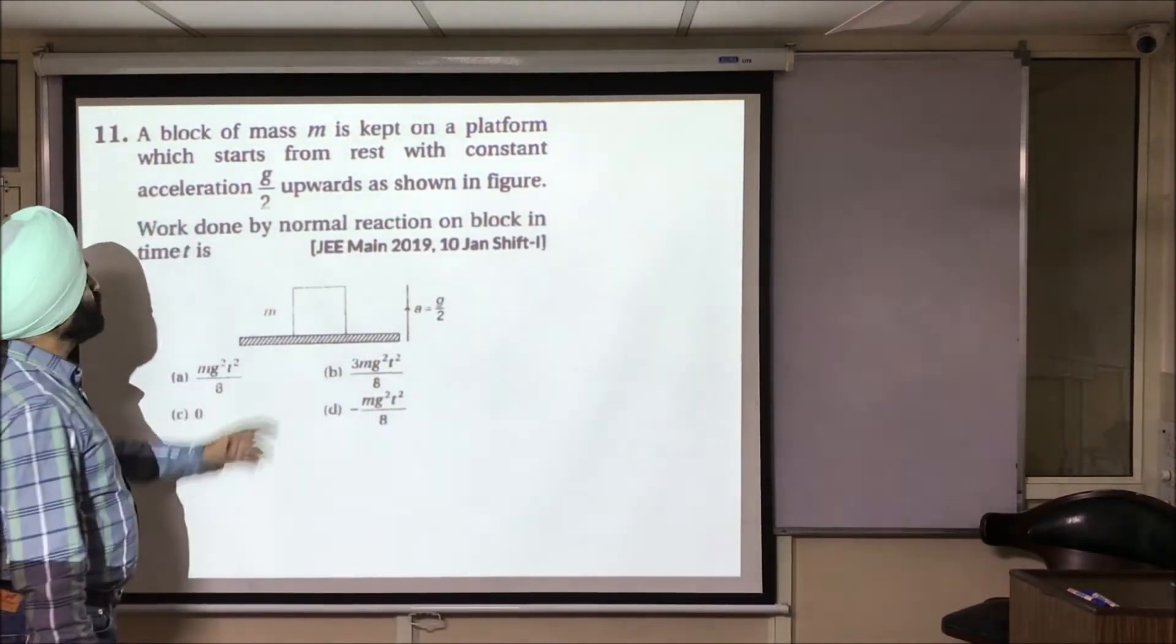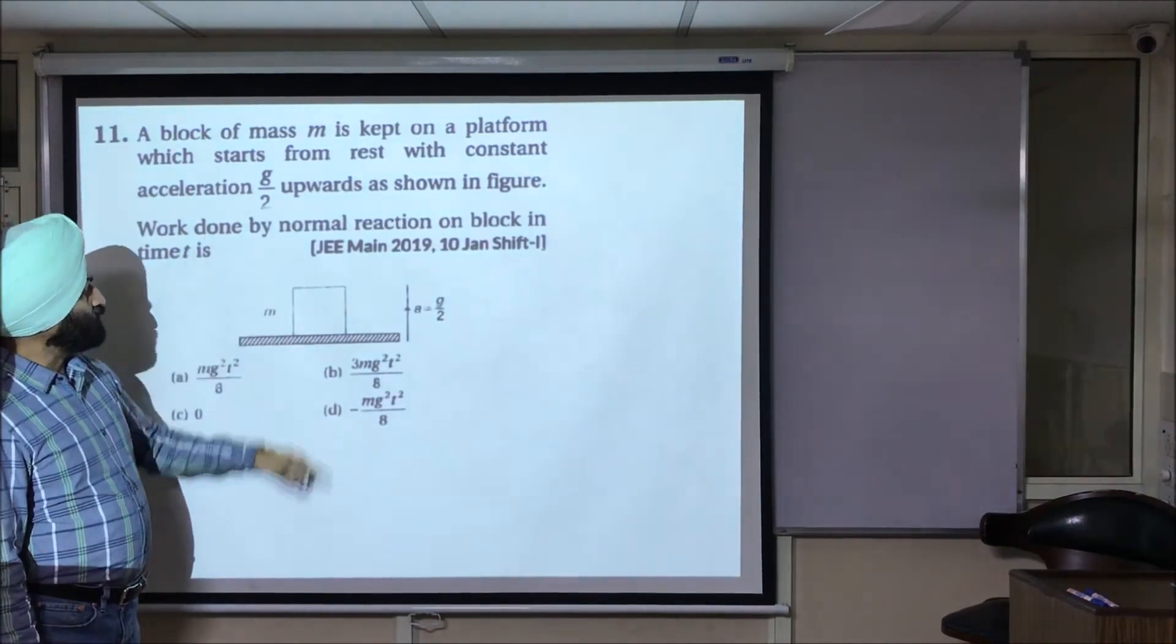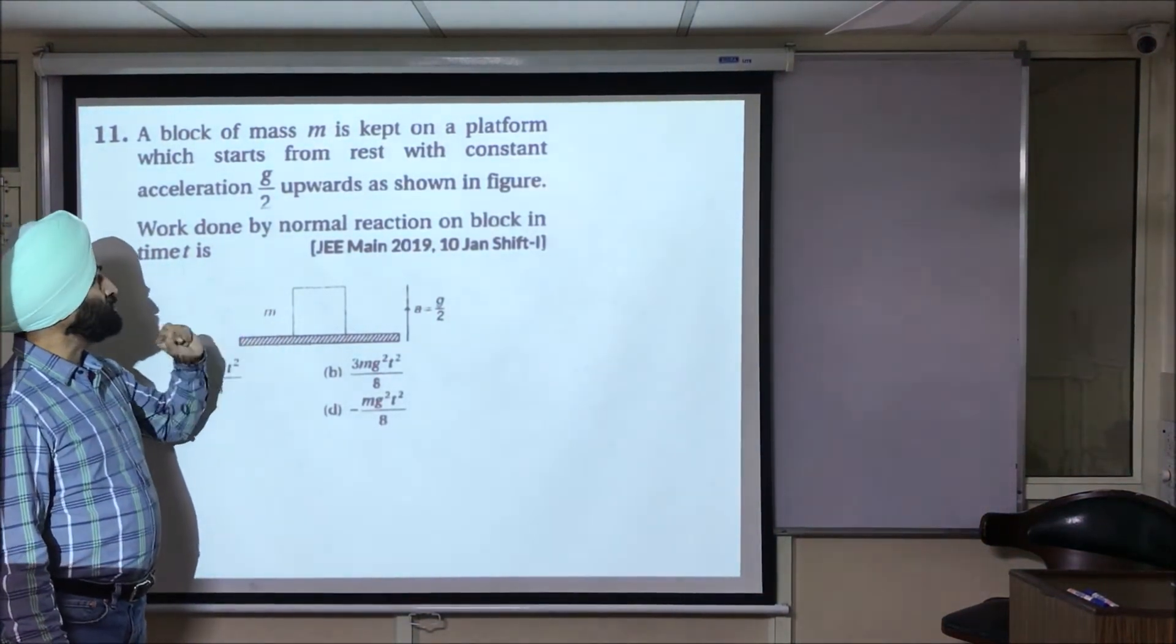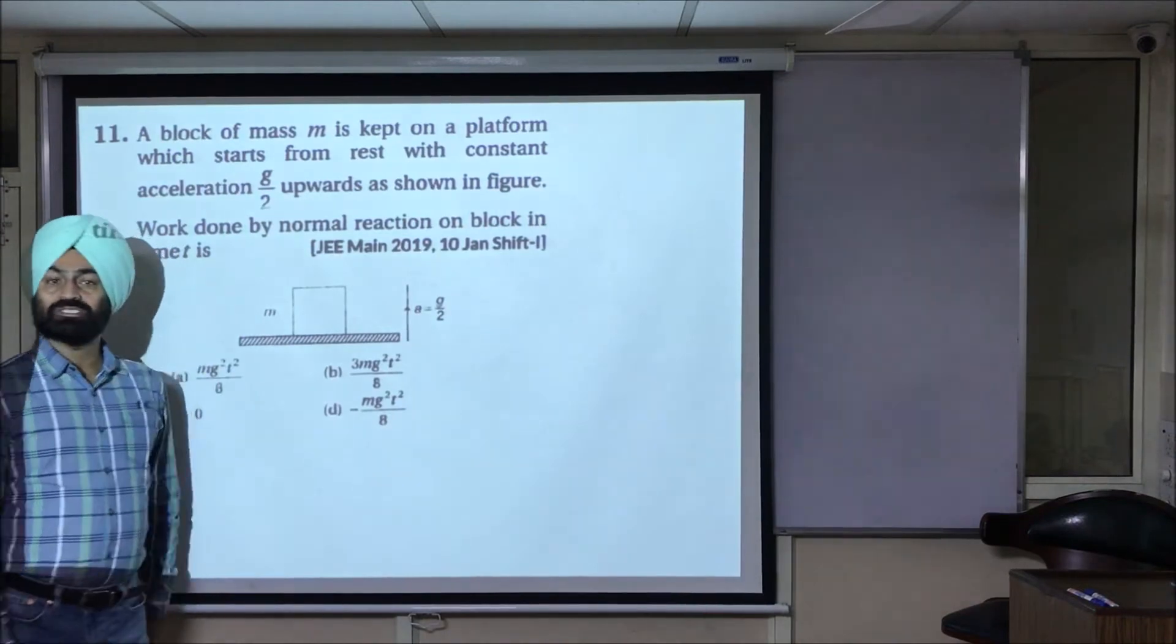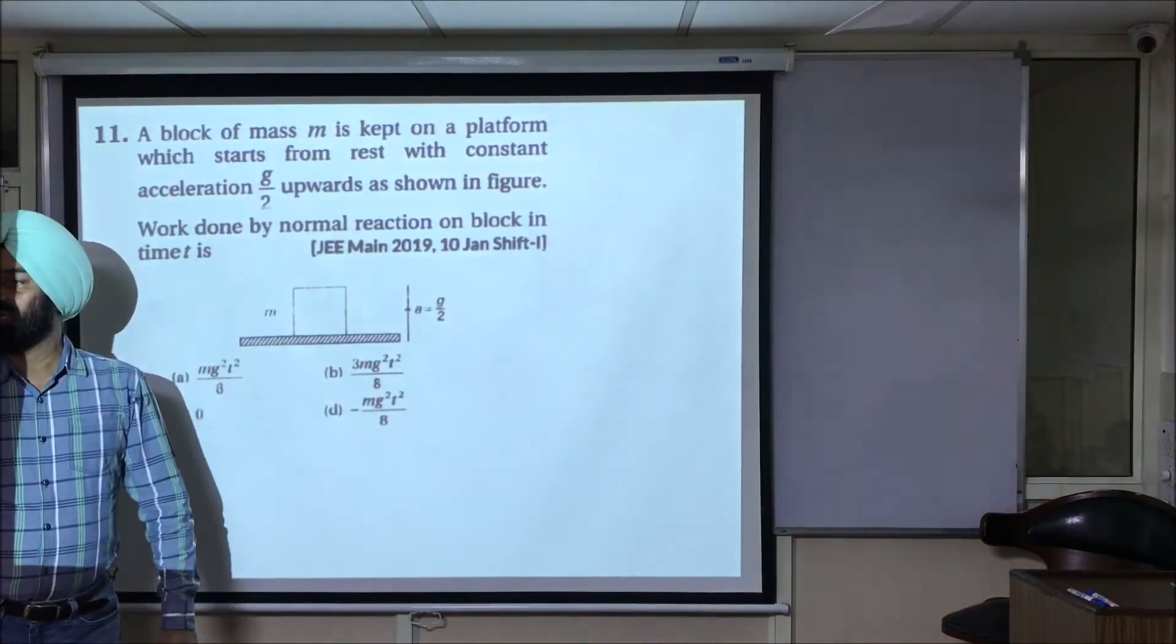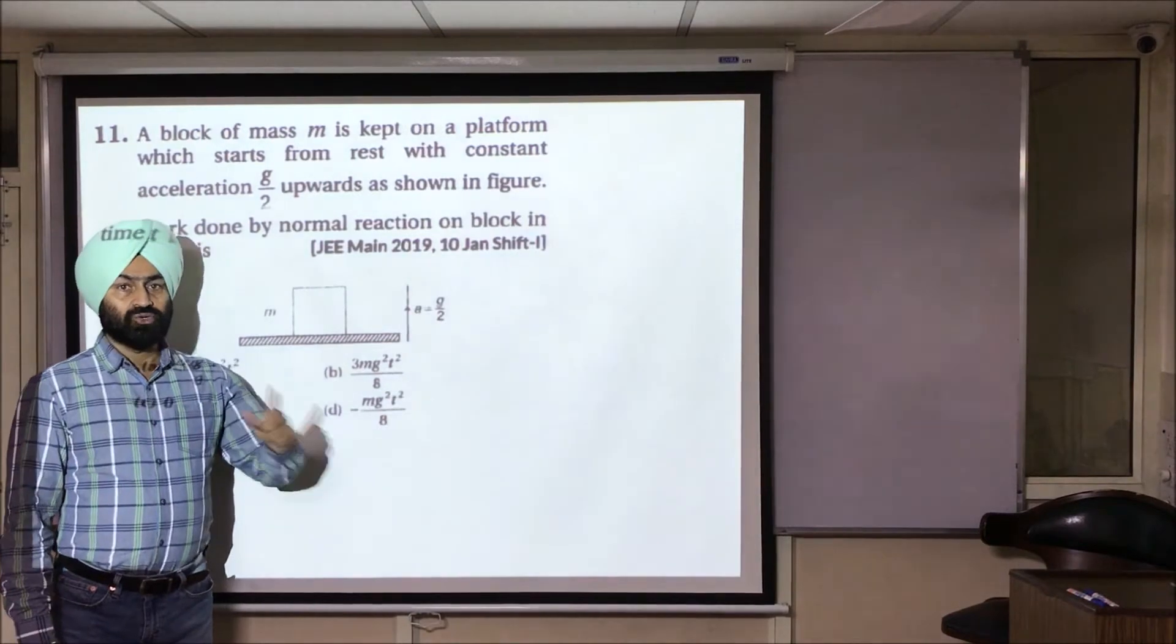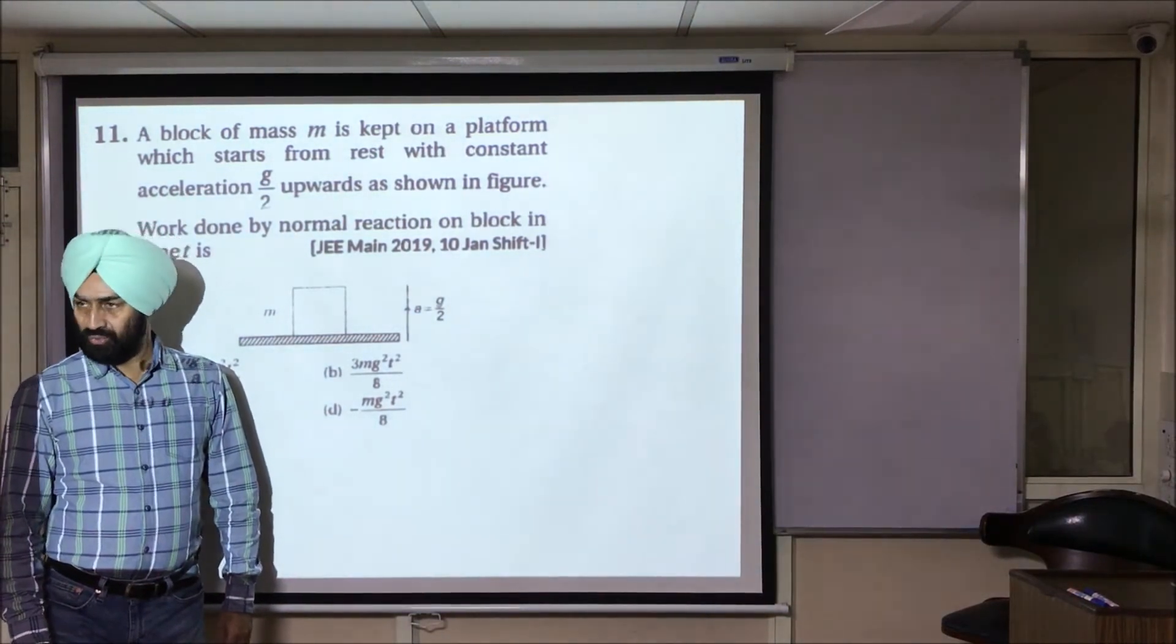First question: A block of mass m is kept on a platform which is rising up from rest with constant upward acceleration g by 2. What is the work done by normal reaction on the block in t seconds? So simple. We have discussed the case of lift. When lift is accelerating up, reaction is given by m into g plus a. Now a is g by 2. So m bracket g plus g by 2, how much? 3mg by 2. That is the reaction.